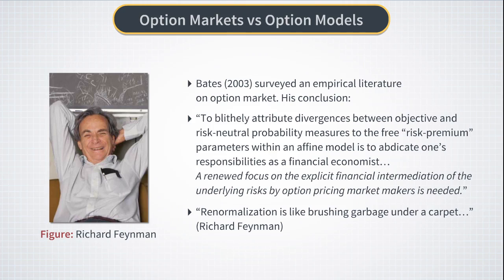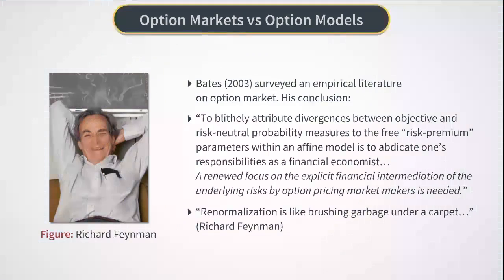This sounds very similar to a transition between the physical measure P and pricing measure Q in financial theory. In both cases, inconsistency of the model with the data is explained away by insisting that the unseen things should be structurally the same as the things that we see. In field theory, the unseen is the physics at ultra-small scales. In finance, the unseen is the pricing measure, as it doesn't exist in any well-defined sense beyond very restrictive assumptions of classical finance, which we will discuss in our next video.